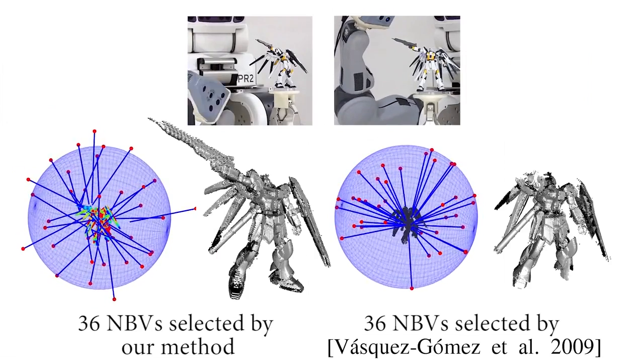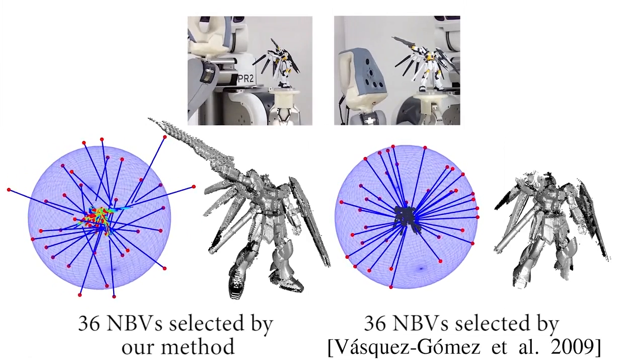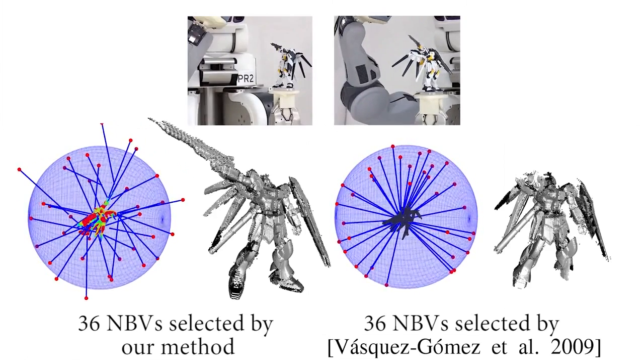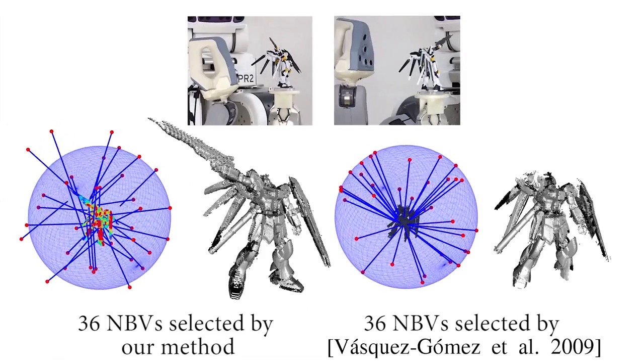Another technique that we compare with is to restrict the view search space onto a sphere. Such simplification may reduce the computation cost, but at the same time limits the precision in scanning complex, self-occluded or feature-rich objects.